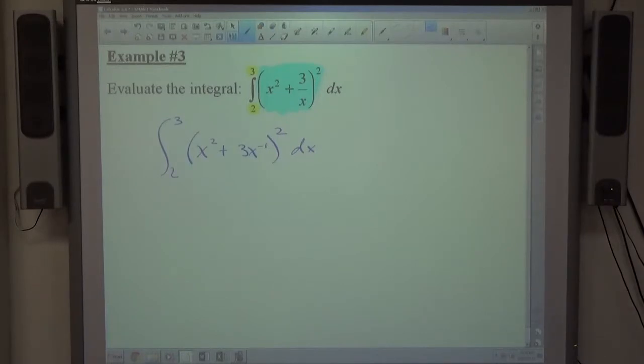So, in general, for differentiation or integration, power structures are better than rational structures. Division by x is not as good as x to the negative power.